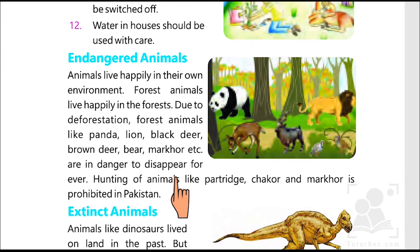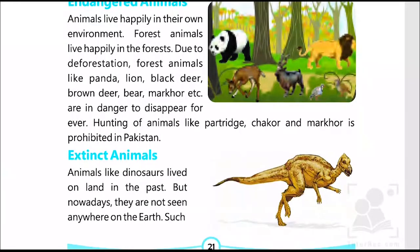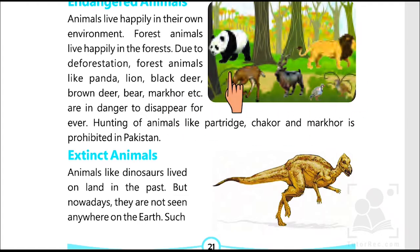Hunting of animals like partridge, chakor and marhor is prohibited in Pakistan. Endangered animals are those who live in forests, but due to deforestation and the heavy cutting of forests and trees, they are being reduced and decreased in number. We may face a day when we don't even know the names of these creatures — these are the endangered animals who are really in danger.